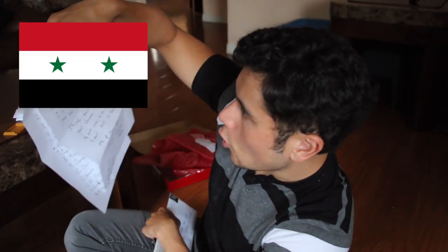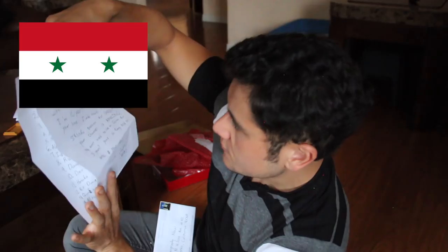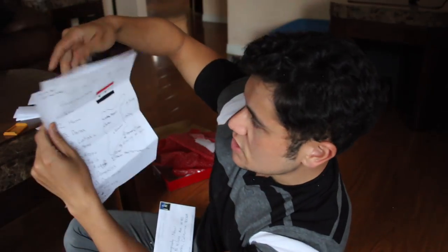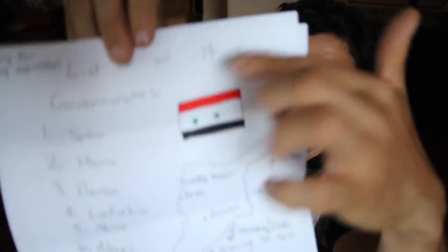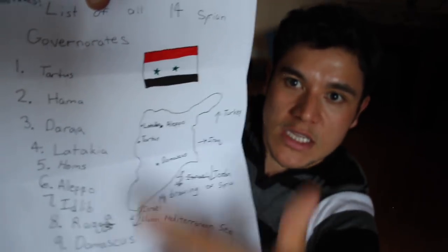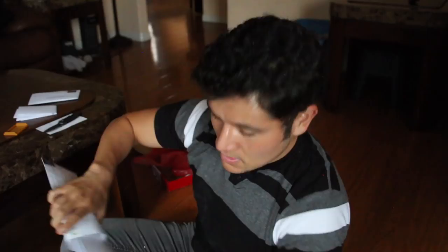I got a letter from Owen, who is half Syrian. He drew a map of Syria with the flag and the 14 governorates listed. That's really cool. Thanks, Owen.